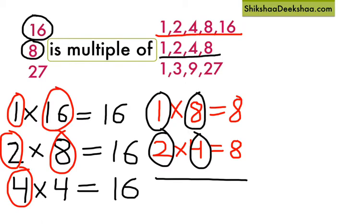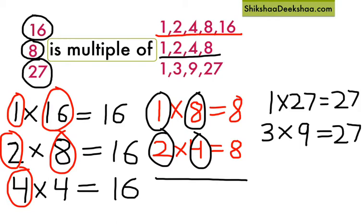We can obtain 27 like this. There are no other numbers left that can be multiplied together to get 27. So we say 27 is the multiple of 1, 3, 9 and 27.